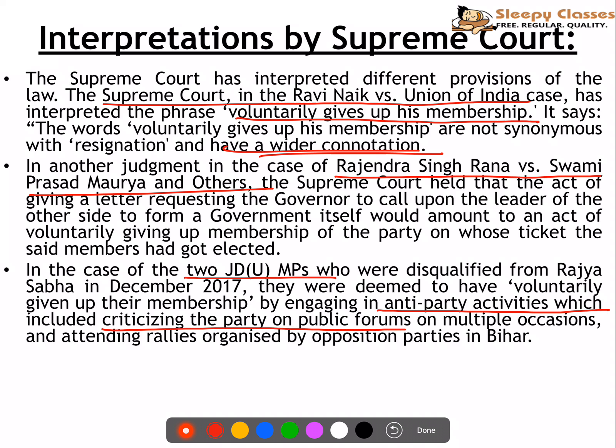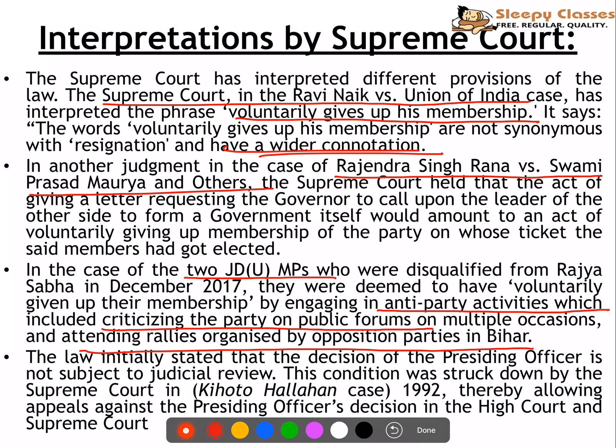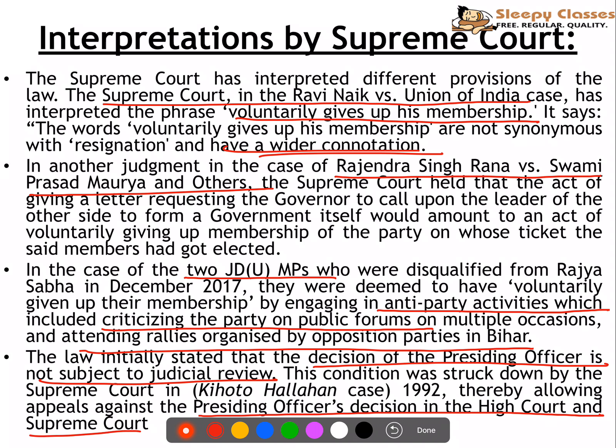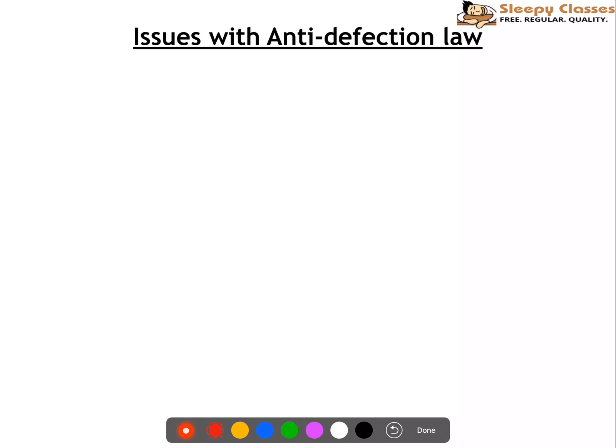There were also two J.D.U. MP cases in December 2017, where they were deemed to have voluntarily given up their membership because they were engaging in anti-party activities — criticizing the party on public forums at multiple locations as well as attending rallies organized by opposition parties. The law initially stated the presiding officer's decision would not be subject to judicial review. However, in the Kihoto Hollohan case, the Supreme Court said that appeals against the presiding officer's decision can be heard in both the High Court and the Supreme Court.